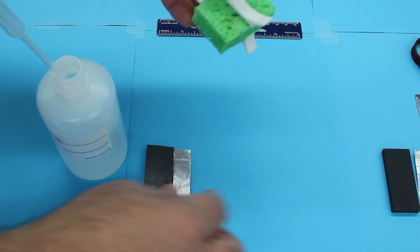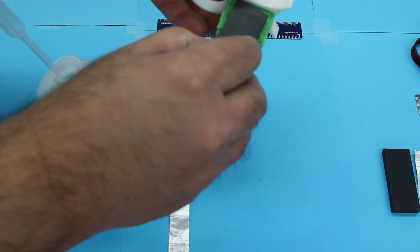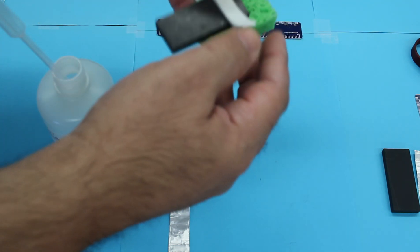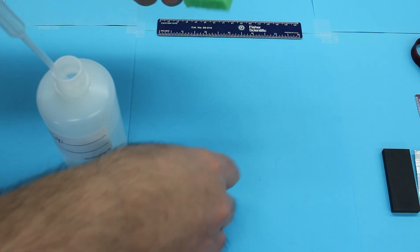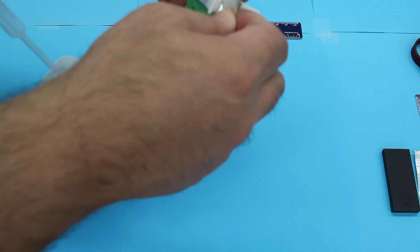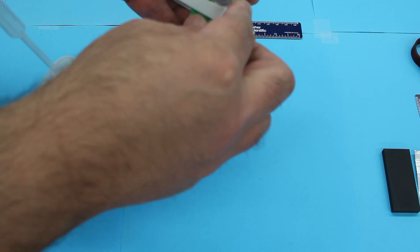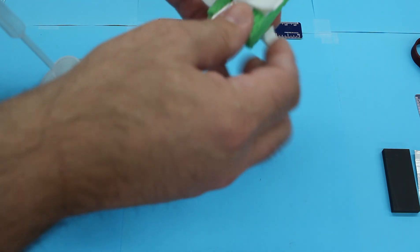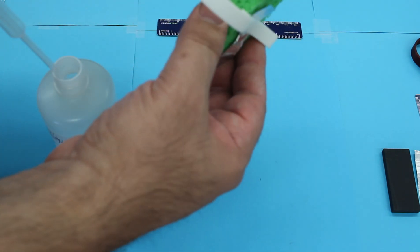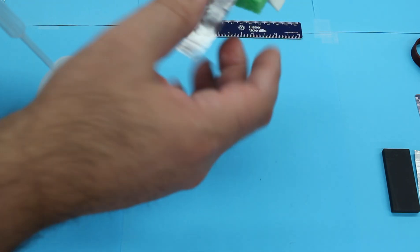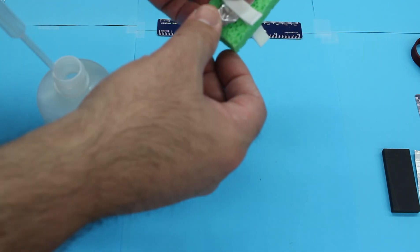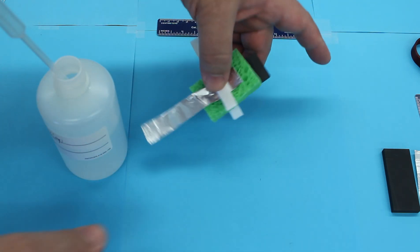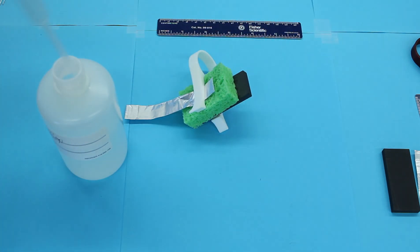I just put the sponge in like this. Take the graphite, place it on one side. Take the aluminum foil and basically seat it in here on the opposite side. It doesn't have to be perfectly symmetrical. In fact, you want the ends of the graphite and aluminum sticking out.